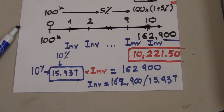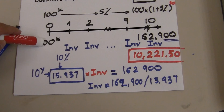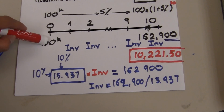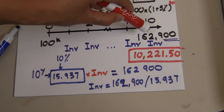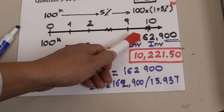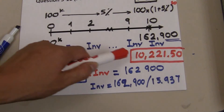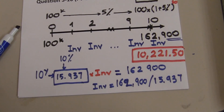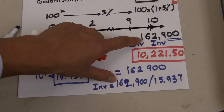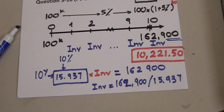So in summary: the house is worth $100,000 today, and at the end of 10 years its price will be $162,900. In order to accumulate that amount, each year you need to put $10,221.50 into your account. At the end of 10 years you will have enough to pay for the house.